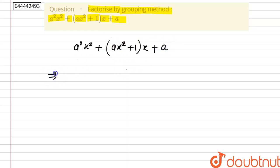We can write this as a²x² + ax³ + x + a.